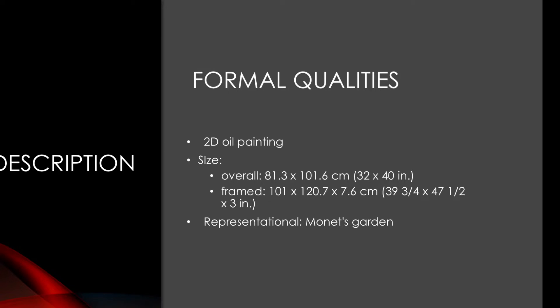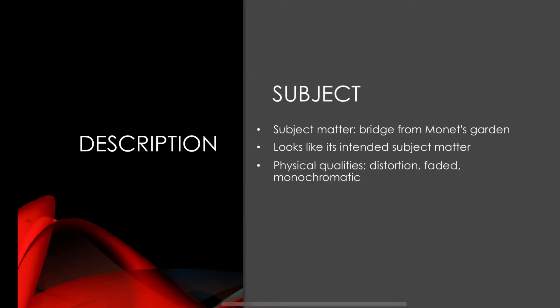The painting is representative of the real-life garden that Monet had created in Giverny, which was his passion. It is not abstract because the subject matter is present — abstract would require a much higher level of distortion. Similarly, it is not non-representational because there is a clear subject depicted. The subject matter is the bridge from Monet's garden as well as Monet's garden itself.